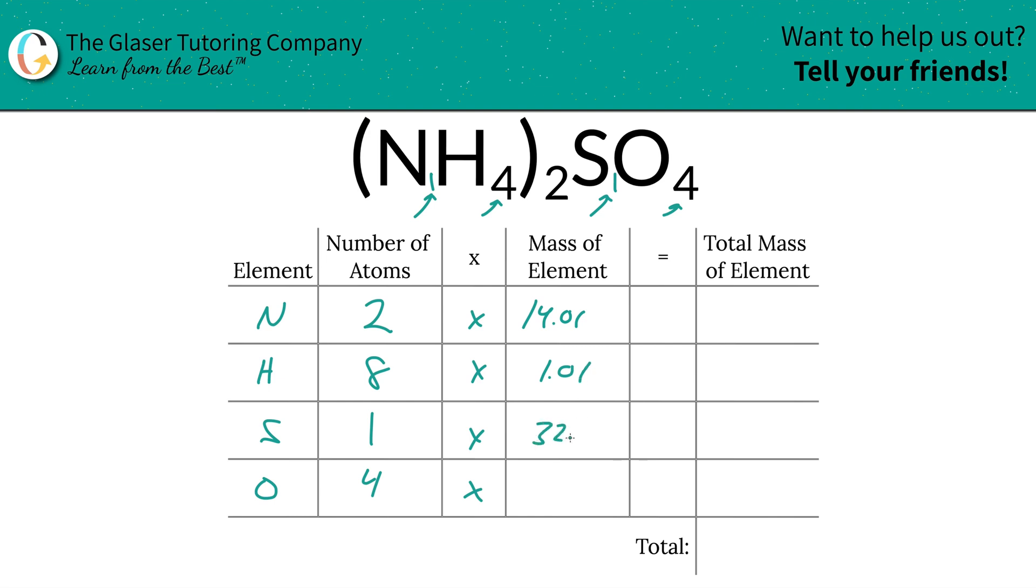So we write them on down, and then we're simply going to multiply the row across now to find the total mass of each element in the compound.